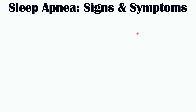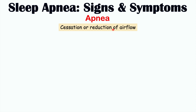Now let's talk about the signs and symptoms that occur with all three of these sleep apnea conditions. As we go through each sign and symptom, we will talk about which ones are more likely to occur in which type of sleep apnea. Because we're talking about sleep apnea, we're going to see episodes of apnea — a cessation or reduction of airflow.